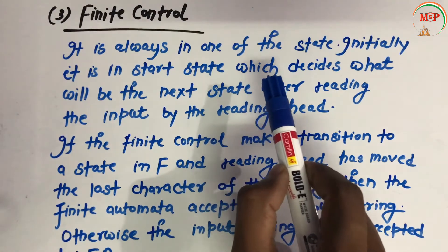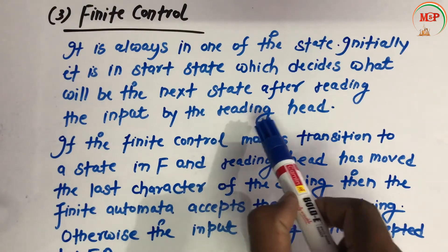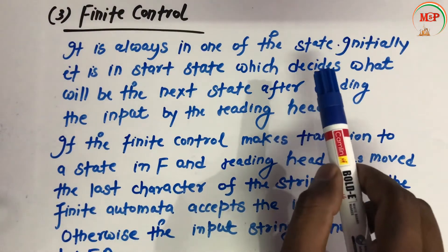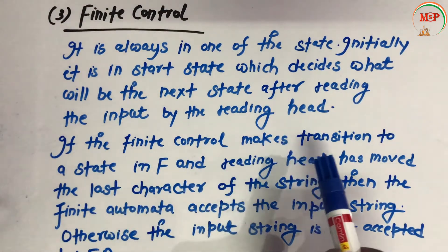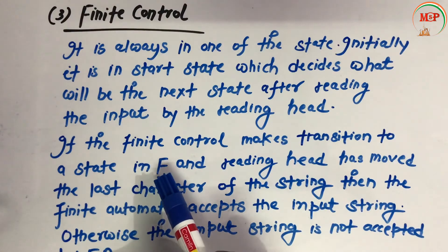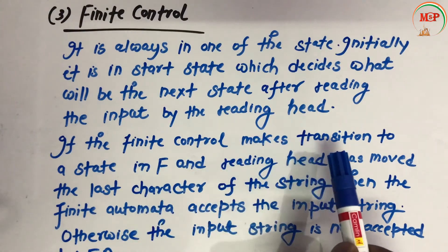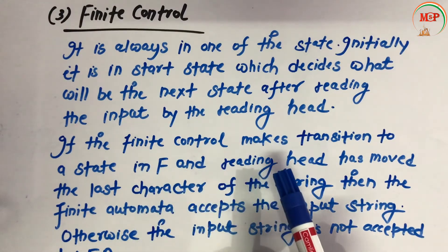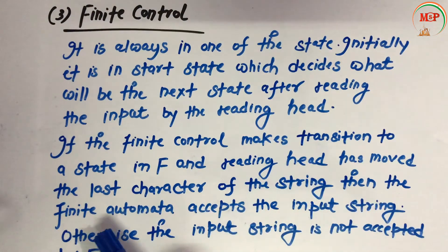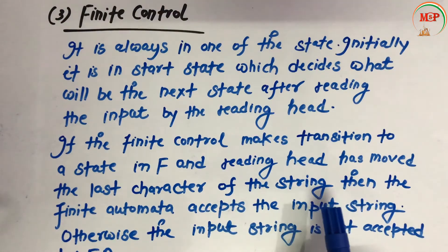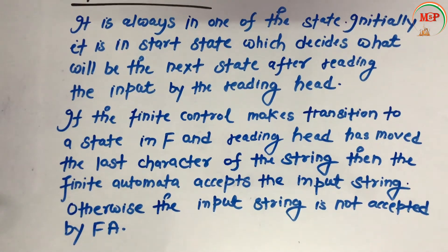After reading the input by the reading head, the finite control decides what will be the next state. If the finite control makes a transition to a state in F and the reading head has moved past the last character of the string, then the finite automata accepts the input string.